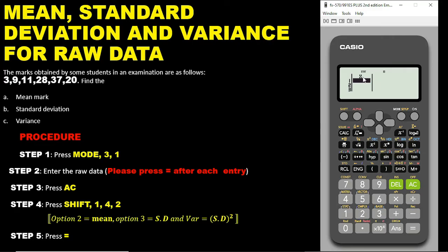Now we have a data entry box. You are going to enter the data one by one. After each entry, you must press the equal sign for it to be stored. Press 3 then equals, then 9 equals, then 11 equals. Be careful to enter the numbers exactly as given — exam pressure can cause you to enter wrong data. Next: 28 equals, then 37 equals, then 20 equals.